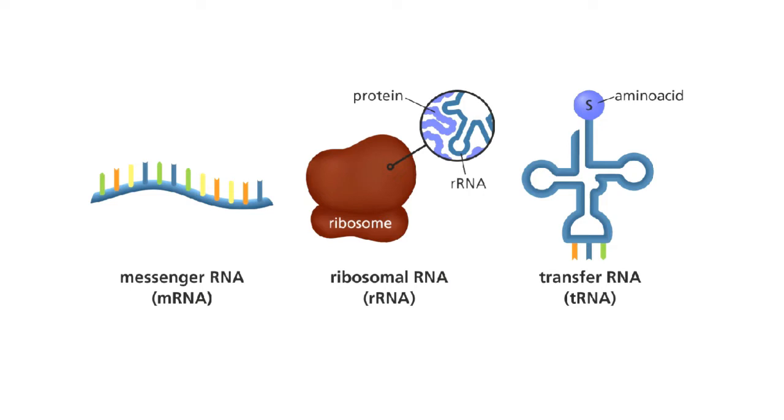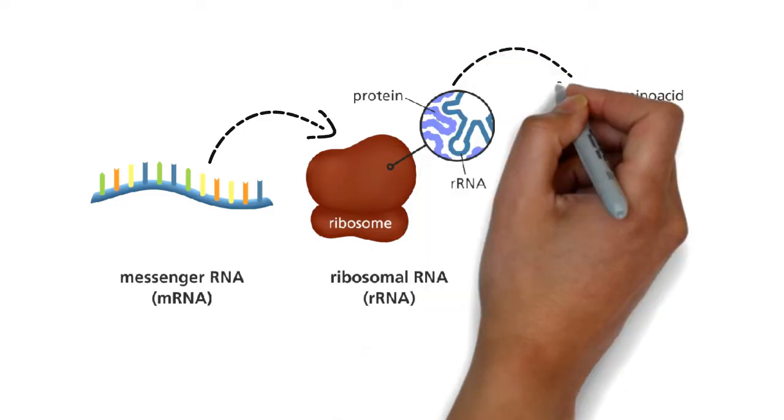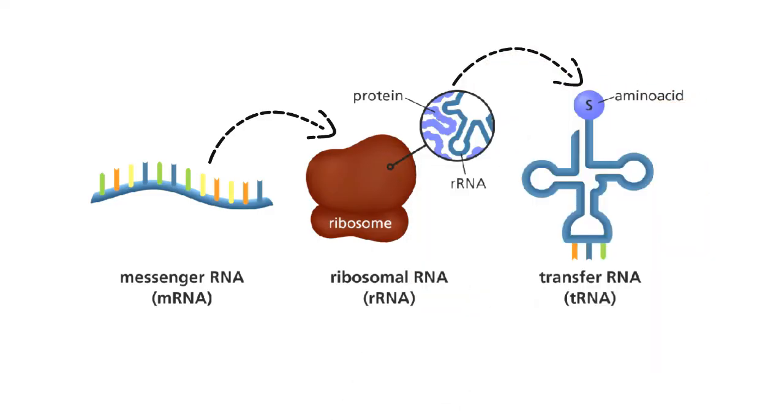So, all these types are involved in gene expression. Messenger RNA brings the message from nucleus, ribosomal makes proper arrangements, and transfer RNA brings amino acids one by one to complete the process.